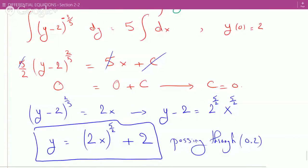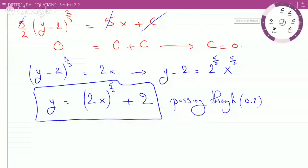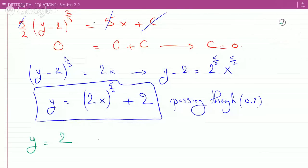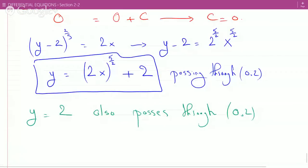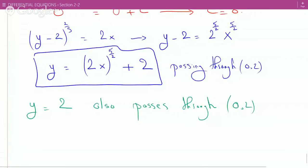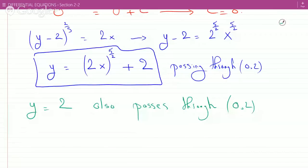But we also know that y equals 2 also passes through the point (0,2), and isn't y equals 2 a solution? Because if y equals 2, dy/dx would be 0.